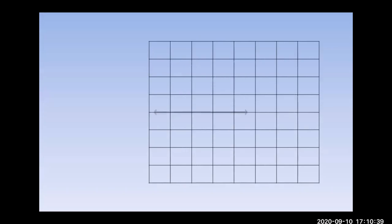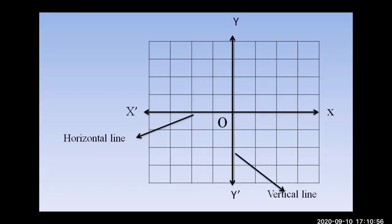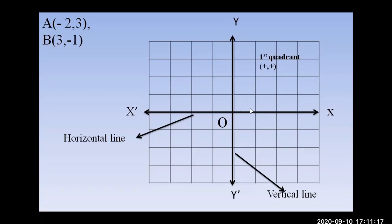On the graph paper, we have horizontal line XOX prime and vertical line YOY prime. When the vertical and horizontal lines intersect at origin O, the graph is divided into four parts, called four quadrants. We will plot two points: A at (minus 2, 3) and B at (3, minus 1).